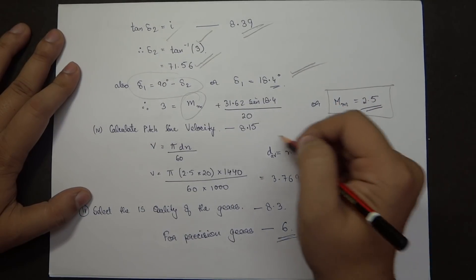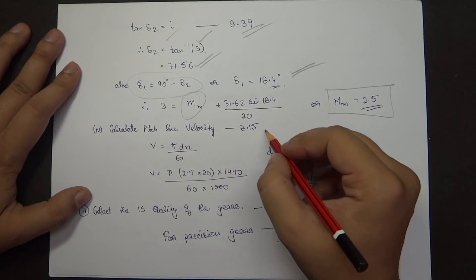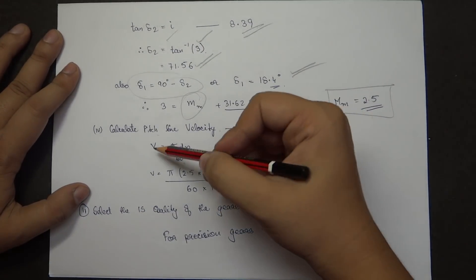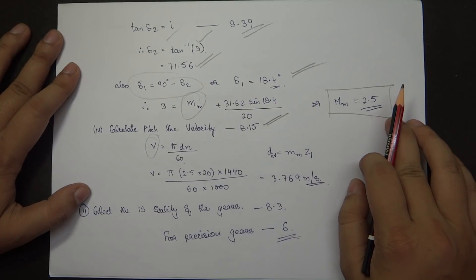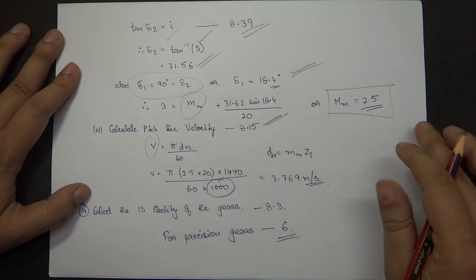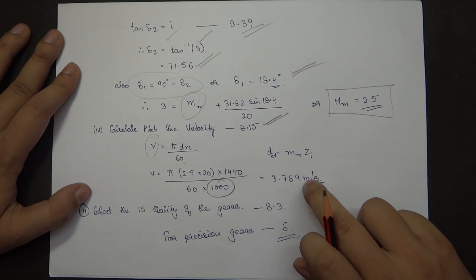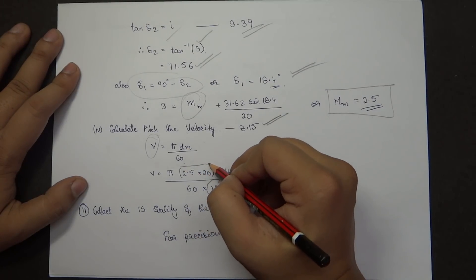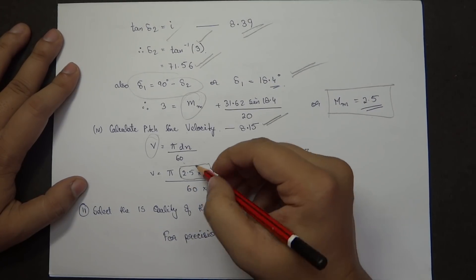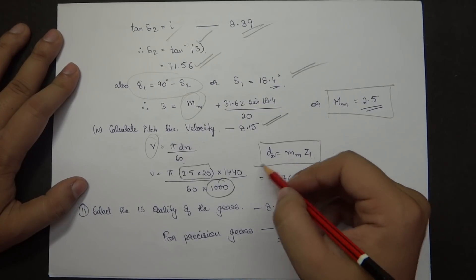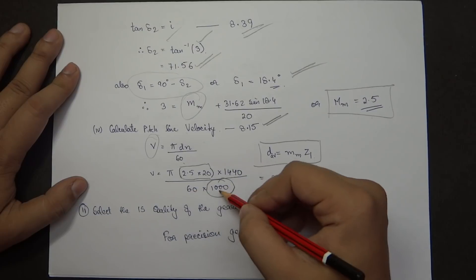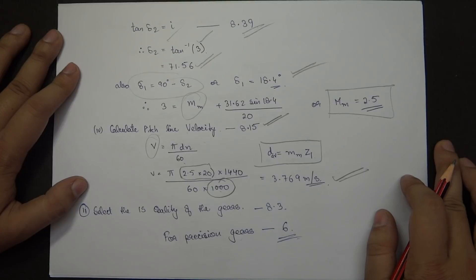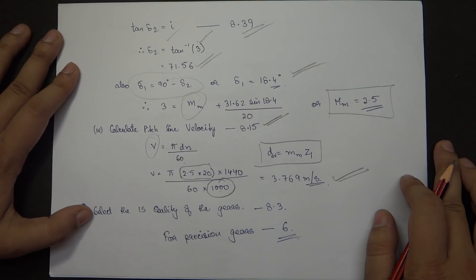The fourth part of step ten is calculating the pitch line velocity using V = π × D × N / 60,000, where D is the average diameter (average module × Z1). So V = π × 2.5 × 20 × 1440 / 60,000 = 3.769 meters per second.